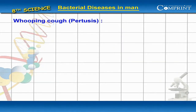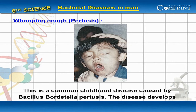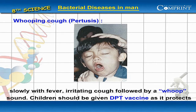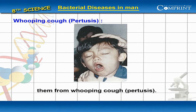Whooping cough or pertussis. This is a common childhood disease caused by Bacillus bordetella pertussis. The disease develops slowly with fever, irritating cough followed by a whoop sound. Children should be given DPT vaccine as it protects them from whooping cough and pertussis.